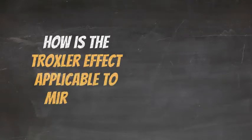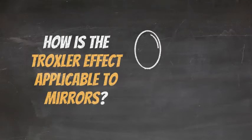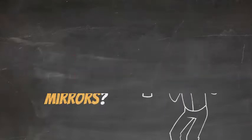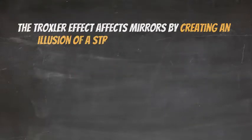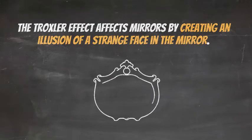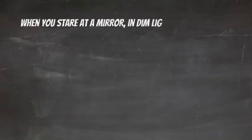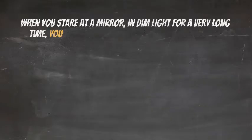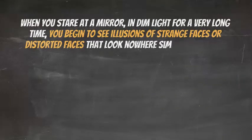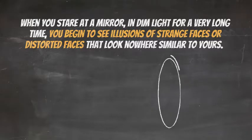How is the Troxler effect applicable to mirrors? The Troxler effect affects mirrors by creating an illusion of a strange face in the mirror. When you stare at a mirror in dim light for a very long time, you begin to see illusions of strange faces or distorted faces that look nowhere similar to yours.